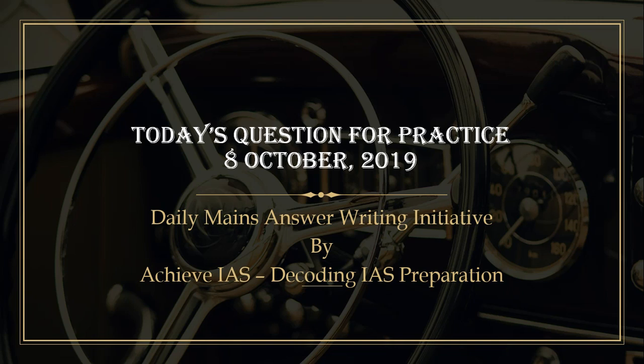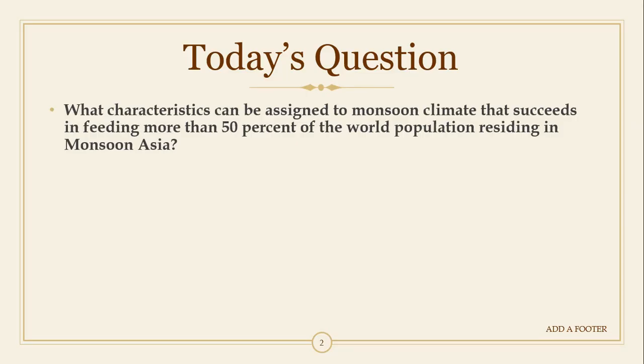As is clear from its name, in this series we daily give you a question of which you have to write the answer. Today is 8th October, so let's see what the question is for today. The question is: what characteristics can be assigned to monsoon climate that succeeds in feeding more than 50% of the world population residing in monsoon Asia? The focus here is on the characteristics assigned to the monsoon climate — not just the monsoons themselves, but also the climate it creates and how it succeeds in feeding 50% of the world population residing in monsoon Asia.